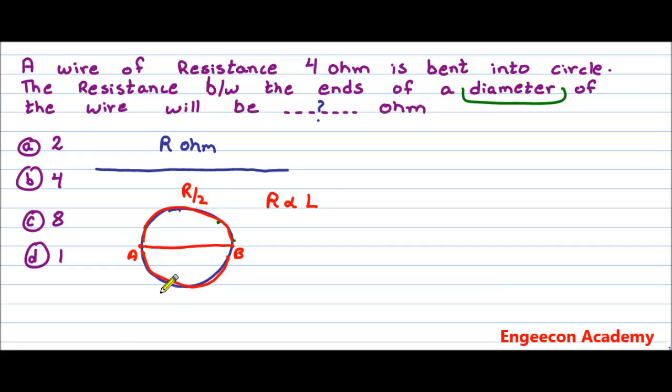So the resistance of this portion will be R divided by 2. And the resistance of this portion will also be R divided by 2. Let us draw the figure that we usually represent this. We have point A, and we have point B. We have two resistances as R divided by 2 and R divided by 2, and we connect them like this.